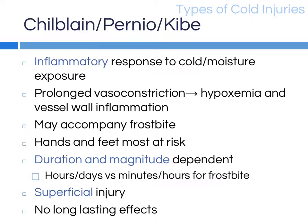Chilblain is an inflammatory response to cold and moisture exposure. Prolonged vasoconstriction from shunting blood to the core results in hypoxemia and vessel wall inflammation, and it is not uncommon for chilblain to accompany frostbite. Chilblain is a superficial condition with relatively no long-lasting effects. The major difference between chilblain and frostbite is duration: frostbite is more common at shorter exposures and lower temperatures, while chilblain is more common with longer exposures at slightly higher temperatures.